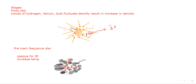As energy becomes sufficient, the star begins to undergo nuclear fusion of hydrogen and becomes a main sequence star — this is the third stage. In the pre-main sequence, temperature continues to rise until it is sufficient for hydrogen fusion. Our Sun is a main sequence star undergoing hydrogen fusion. The star reaches an equilibrium where energy radiated by the star balances with thermonuclear fusion and gravitational force — the star's size remains constant because radiation pressure outward balances gravitational pull inward.